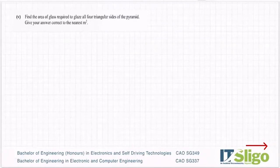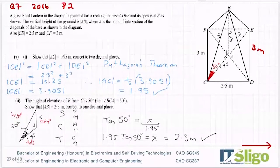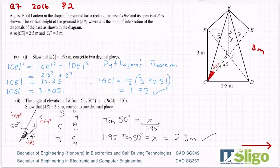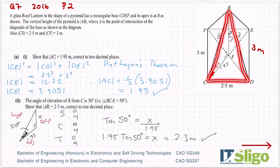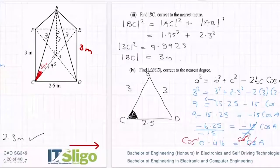So find the area of glass required to glaze all four triangular sides of the pyramid. Give your answer correct to the nearest meters squared. So let's go back to our pyramid. Let's have a look. So four sides, if you can imagine it, of your lantern. And we have to find how much glass. So these are triangles that we're dealing with. So there's one triangle of sides 3, 3 and 2.5, the one we're just after drawing. And then the ones here on the side, a little bit different, 3, 3 and 3.